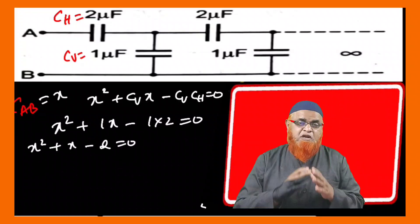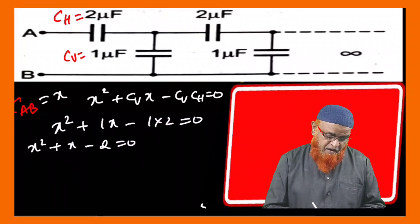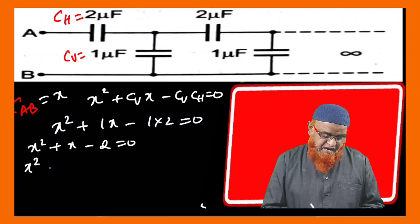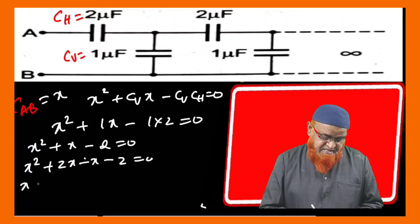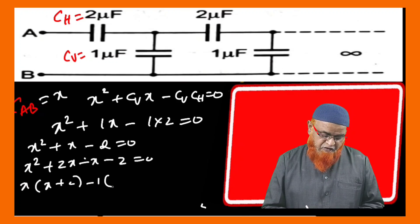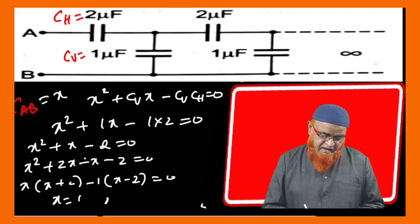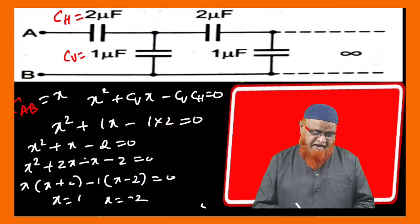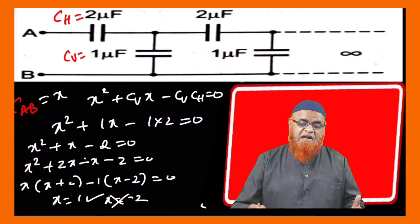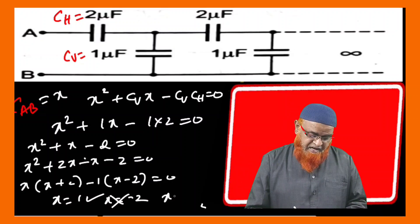We solve this quadratic equation. Factoring: X squared + 2X minus X minus 2 = 0, giving X(X + 2) minus 1(X + 2) = 0, so (X + 2)(X - 1) = 0. Therefore X = 1 or X = -2. Since capacitance cannot be negative, we reject X = -2, giving X = 1 microfarad.